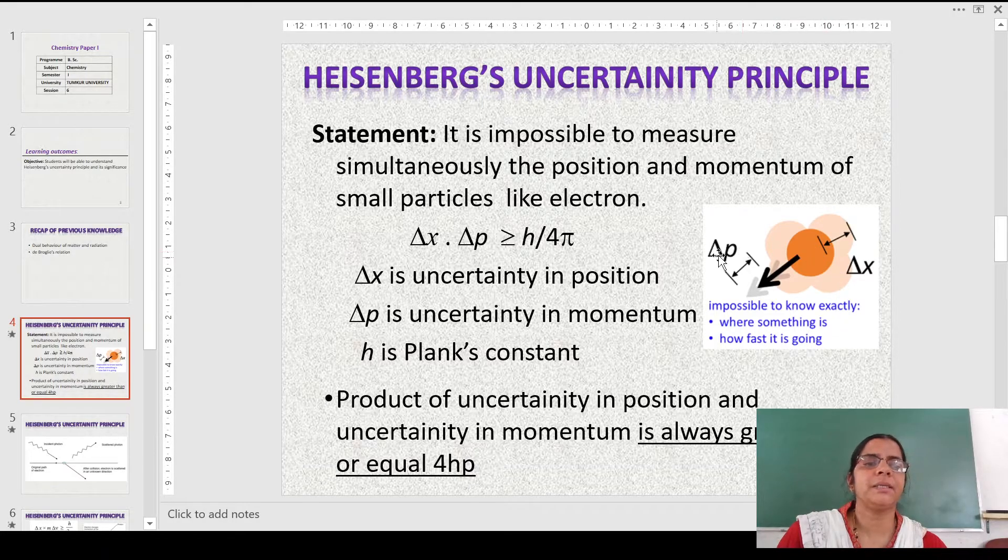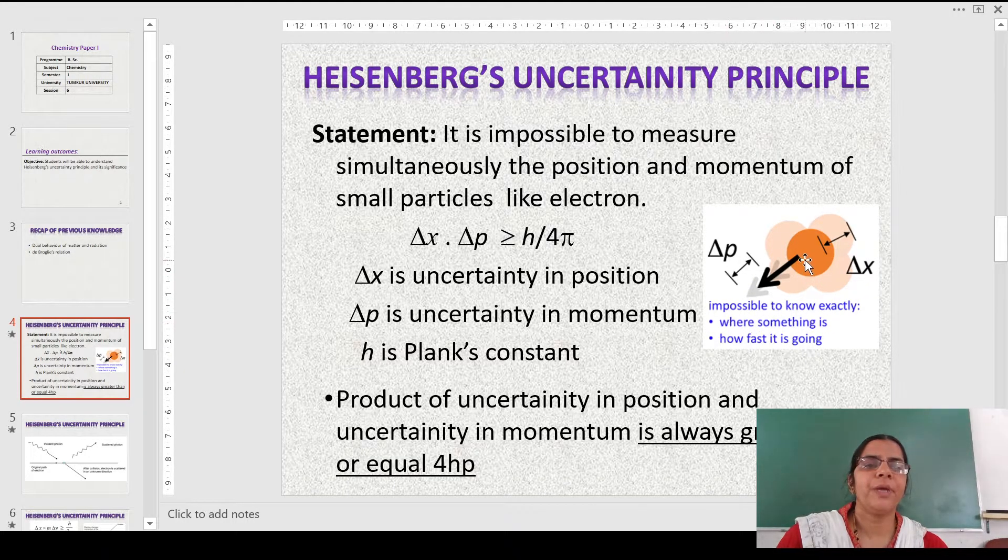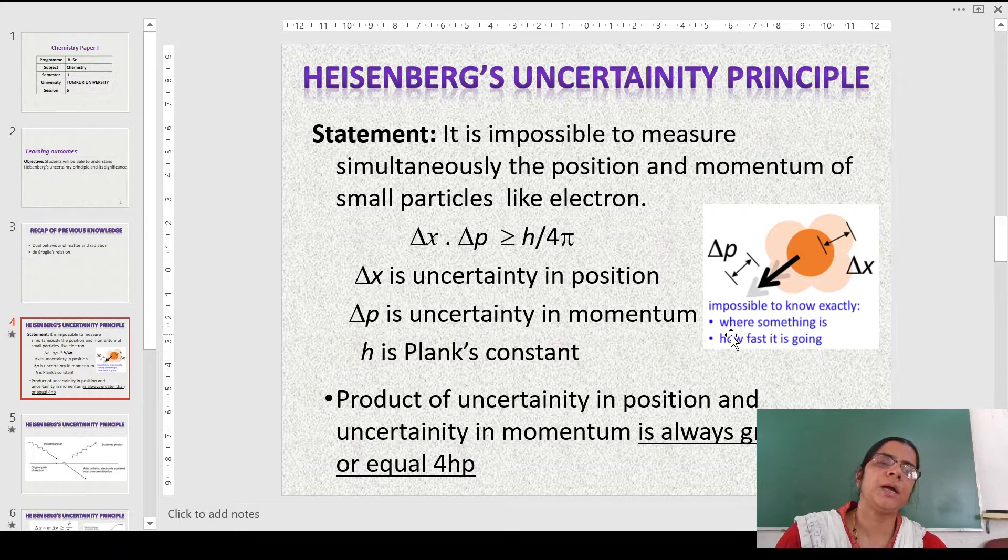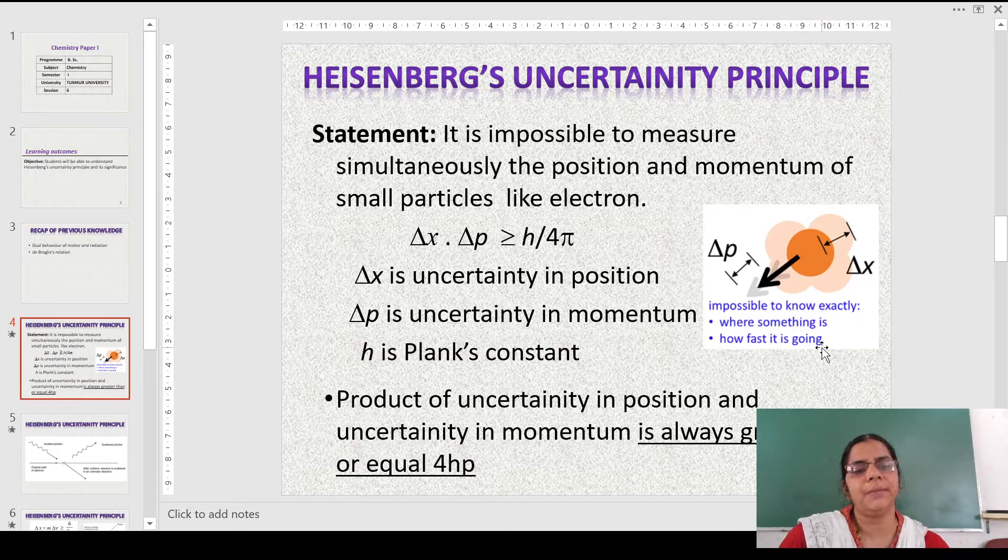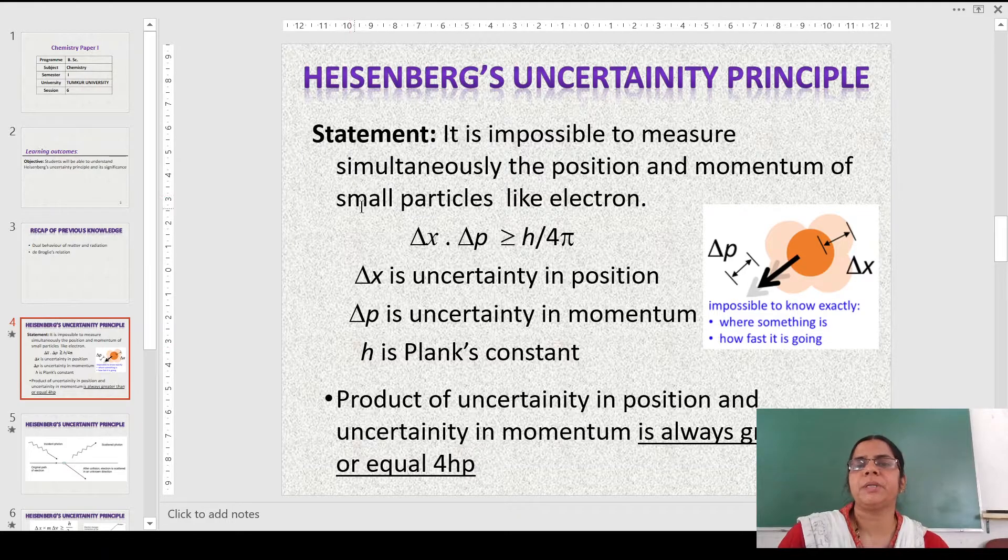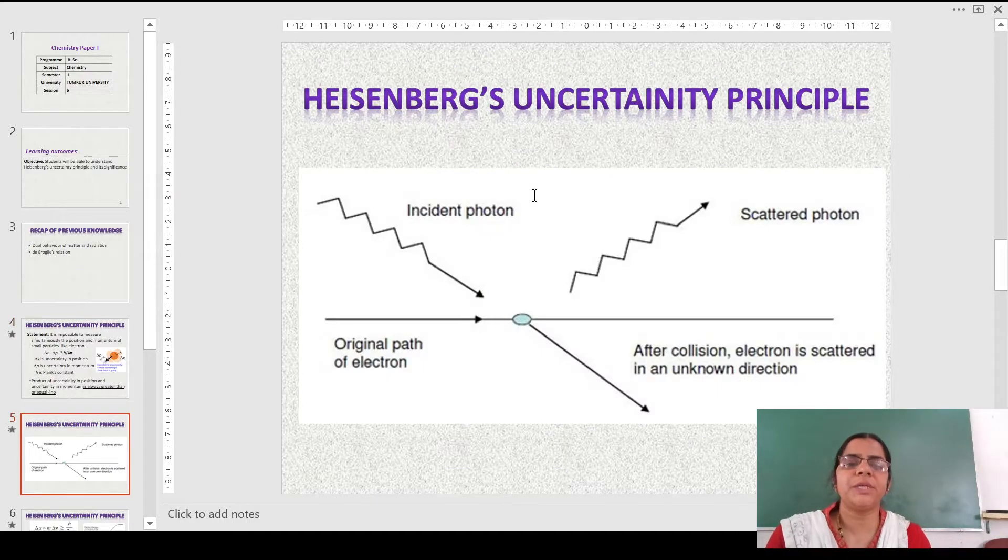So we can see that it is impossible to know both. Both the change in momentum as well as the change in position cannot be determined. It means where is the electron or how fast it is going cannot be determined easily, and this is because of the small size of the electron. If one is measured accurately, there is uncertainty in the other property.